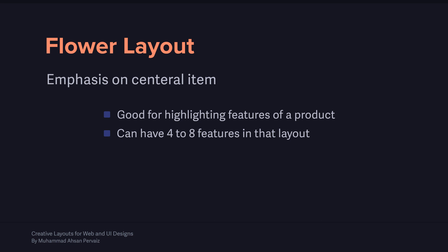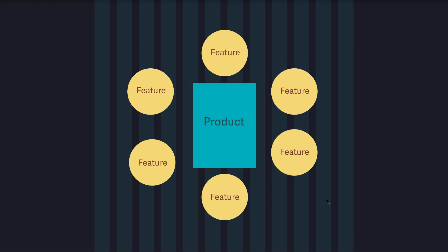This is a very simple arrangement which we have seen a lot of times, but maybe you might not recognize it. The product is in the middle — it could be a mobile app, a perfume, or anything else — and then we have features: feature one, two, three, four, five, six. So I am using six petals of this flower. Others might call it something else, but for simplicity, this is a flower-shape layout.